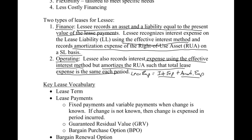Now for some key terms. Lease term is simply how long the lease lasts. Lease payments — remember it said present value of the lease payments — include fixed payments and variable payments when the change is known. In this class we mostly focus on fixed payments, which would be the annual rental payment. Your teacher might get into variable payments, so make sure you're prepared if they do.